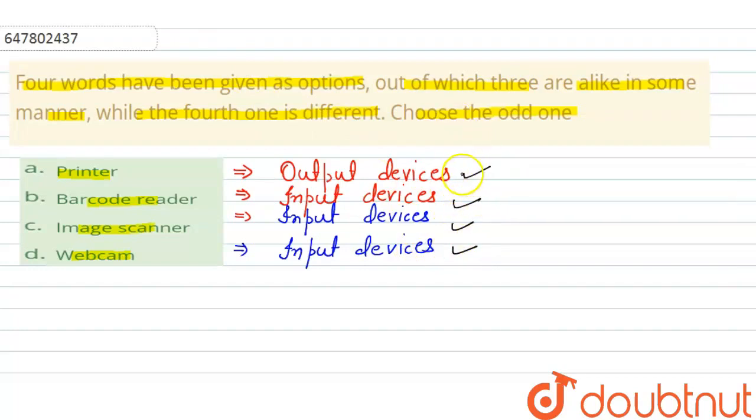But option A, the printer, is different. So what will your answer be? Option A, which is printer. I hope the solution is clear. Thank you.